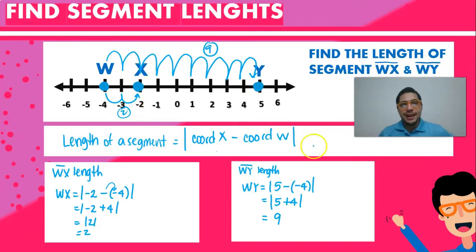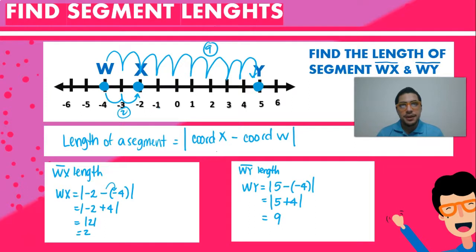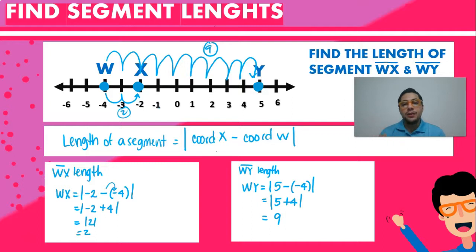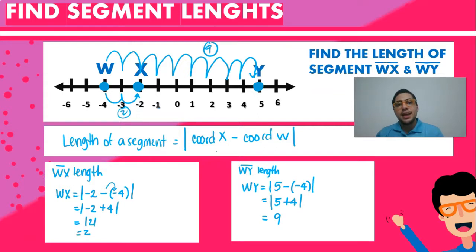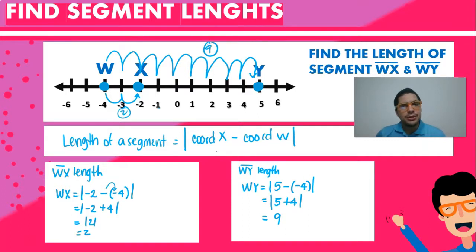So that's pretty much it guys. Just remember: to find the length of a segment, it's always going to be a positive quantity. You just have to subtract the coordinates of the two points of the segment. Find the two points, subtract them, and don't forget to take the absolute value. And if they are integers or simple numbers, you can actually just count the steps like we did in this example.